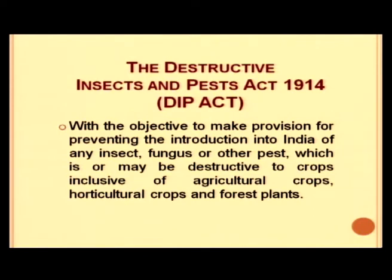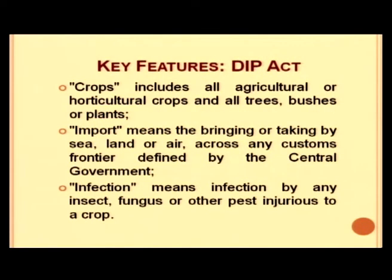The objective of the DIP Act was to make provisions for preventing the introduction into India of any insect, fungus, or other pest that is or may be destructive to crops, including agricultural, horticultural crops and forest plants. Three important definitions in the DIP Act are: 'crop' (includes all agricultural and horticultural crops and all trees, bushes, or plants); 'import' (bringing or taking by sea, land, or air across any customs frontier); and 'infection' (infection by insect, fungus, or other pest injurious to a crop).